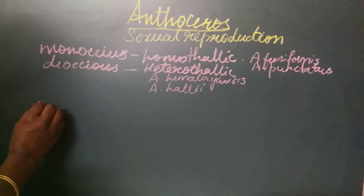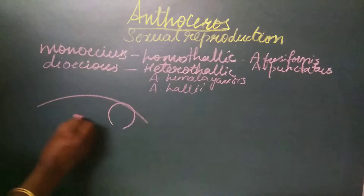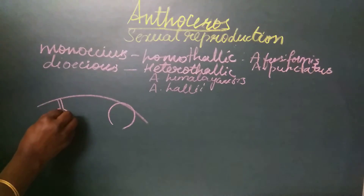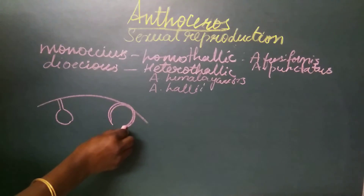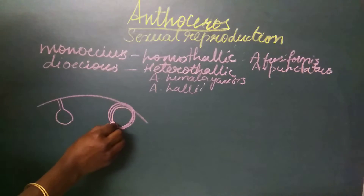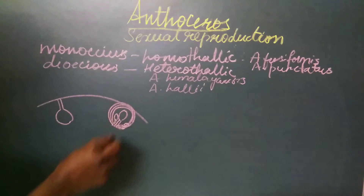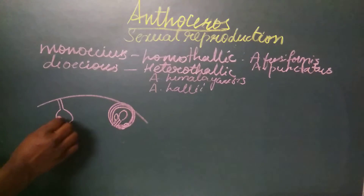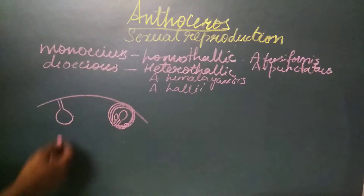Both the male and the female sex organs are seen on the dorsal surface of the thallus. When we take a vertical section of the thallus, we find the male and female sex organs on the same thallus in a homothalic species. The antheridium develops inside chambers called anthridial chambers, which are mucilaginous in nature. Inside the anthridial chamber, the antheridium can occur as a single antheridium or as groups. The archegonia is seen with its venter embedded inside the tissue.